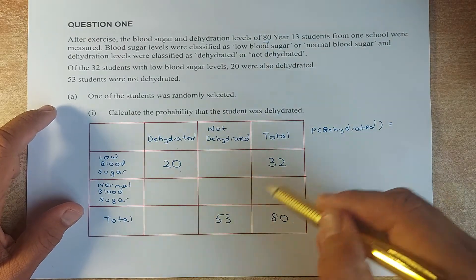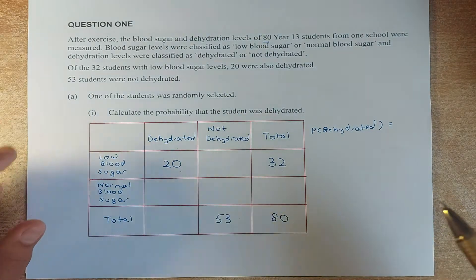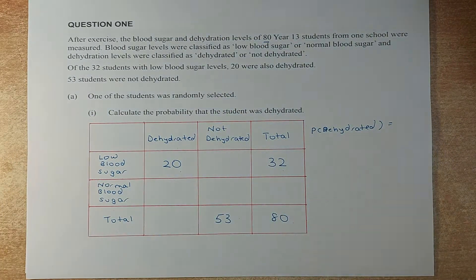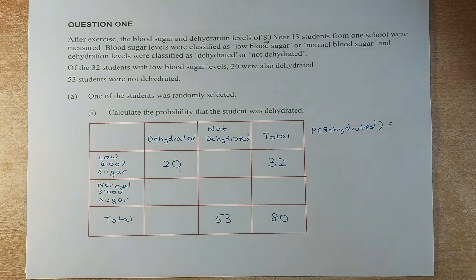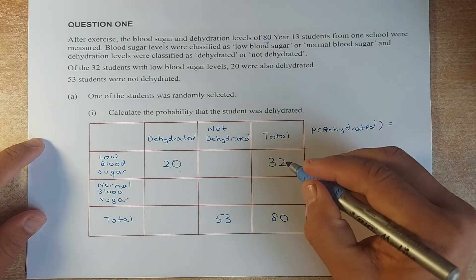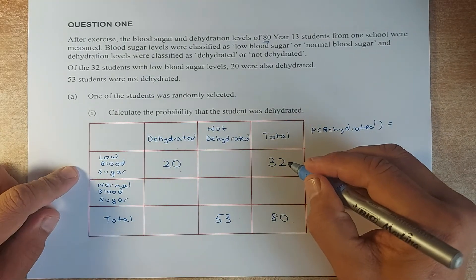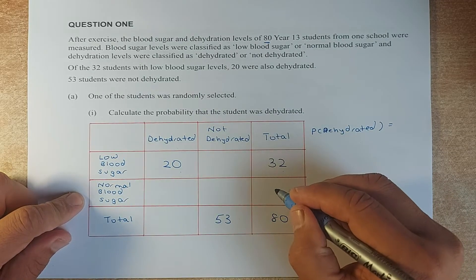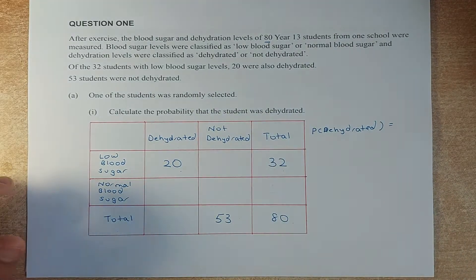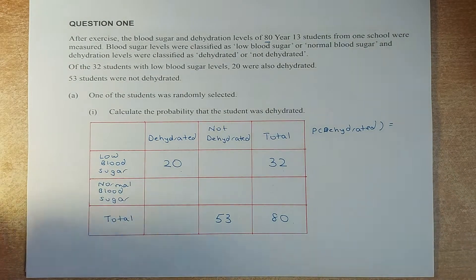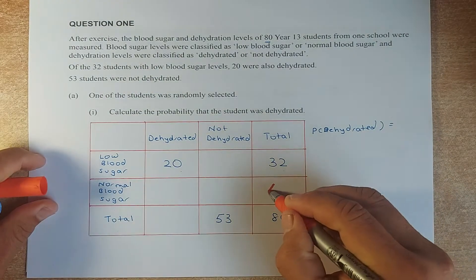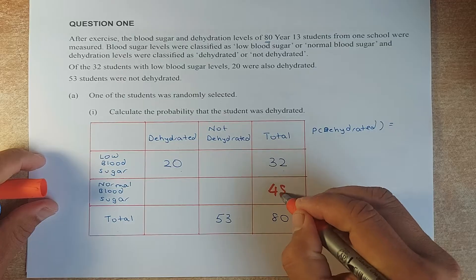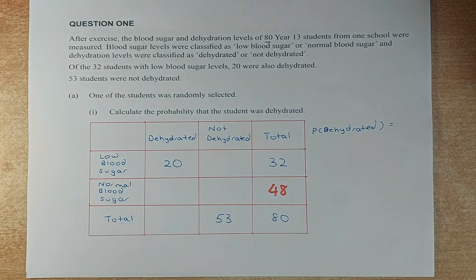We need to fill in the remaining boxes. If the total is 80 and low blood sugar is 32, then normal blood sugar will be 48, because 48 plus 32 is 80.